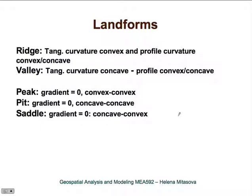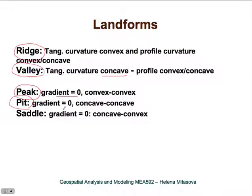Profile and tangential curvature pick up ridges and valleys, enabling landform classification. A ridge is defined as a landform where tangential curvature is convex, with profile curvature either convex or concave. A valley is where tangential curvature is concave, again with either profile curvature sign. At exactly a peak point, gradient is zero and the shape is convex-convex; at a pit, gradient is zero and the shape is concave-concave.